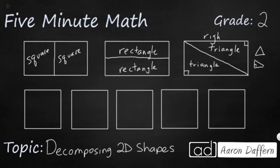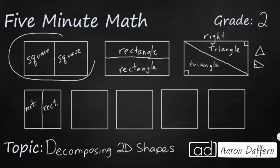Now let's take a look at our squares at the bottom — we'll do the same thing, starting simple. When I cut a square in half with a vertical line, I get two rectangles. You can't take a square and cut it in half and get two squares; two squares make a rectangle. Same thing with a horizontal line — you're still going to get two rectangles.